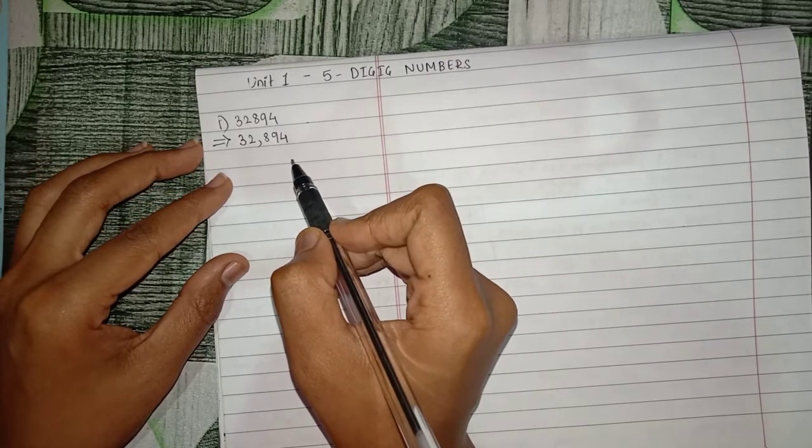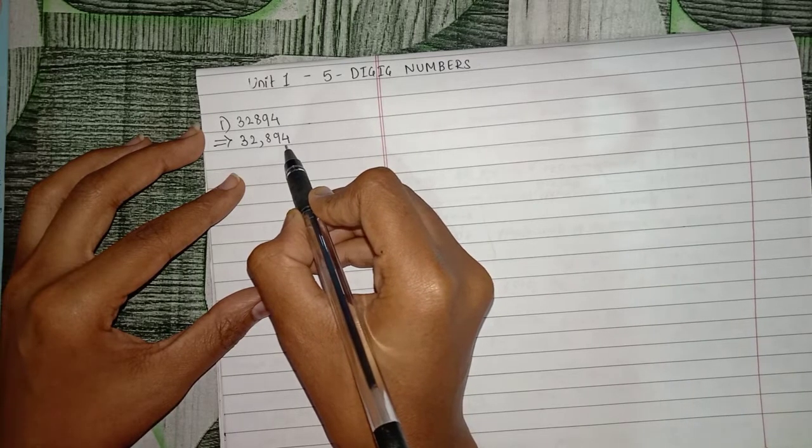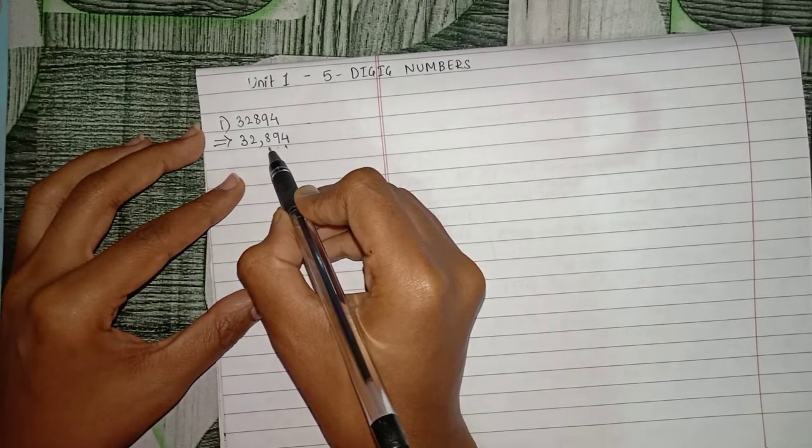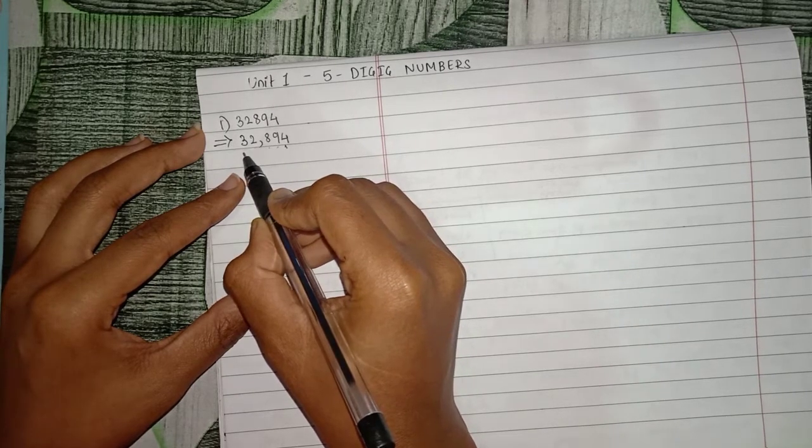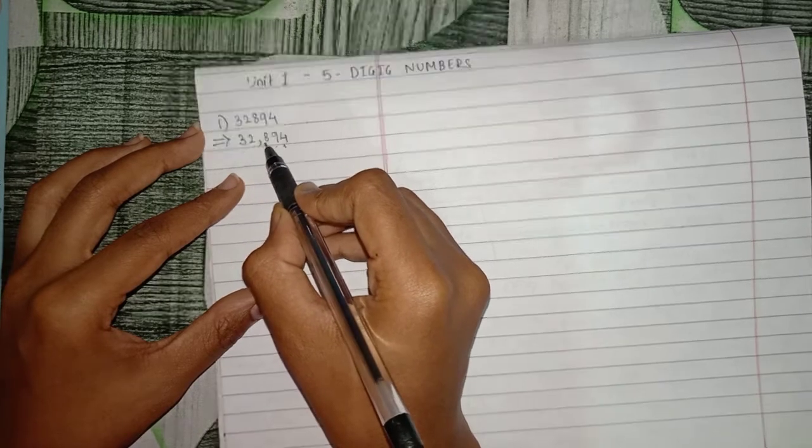So you have to count: this is the units place, this is tens place, this is hundreds place, this is thousands place, and this is ten thousands place. So thirty-two thousand, eight hundred and ninety-four.